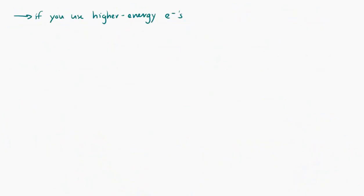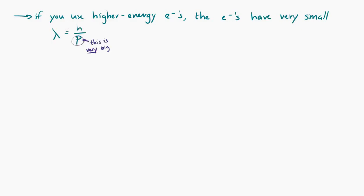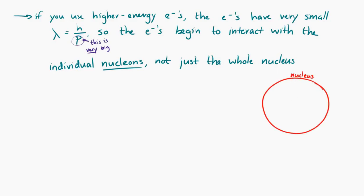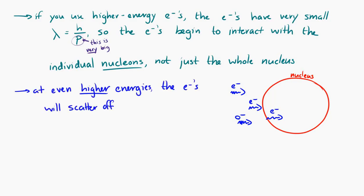If you use even higher energy electrons, they have very small de Broglie wavelengths and begin to interact not just with the nucleus as a whole, but with individual nucleons inside the nucleus. At high enough electron energies, the electrons scatter off the quarks that are inside the nucleons, which are inside the nucleus. This is one of the ways we get observational evidence for the existence of quarks.